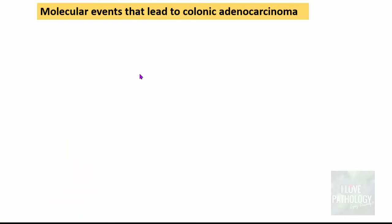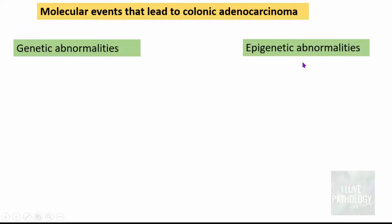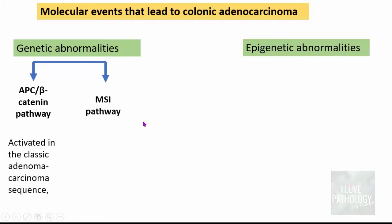Now let's look into the molecular events that lead to colonic adenocarcinoma. There are two important things: one is genetic abnormalities, and second is epigenetic abnormalities. The genetic pathways are: one, the APC or beta-catenin pathway, and two, the MSI or microsatellite instability pathway.